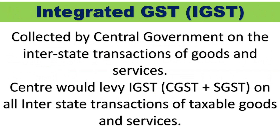Integrated GST means IGST. It is collected by the Central Government on interstate transactions — meaning between one state and another state, where two different states are involved. IGST, Integrated Goods and Services Tax, is nothing but the sum of CGST plus SGST on all interstate transactions of taxable goods and services.